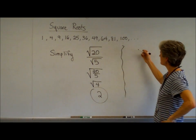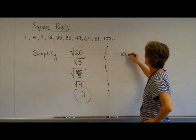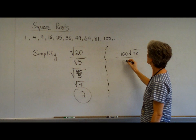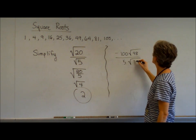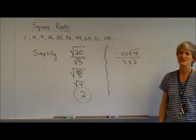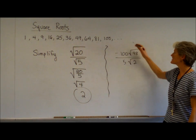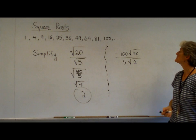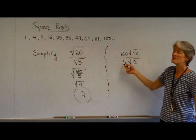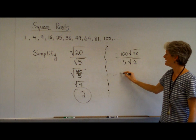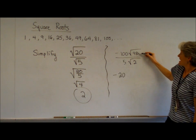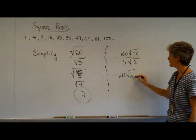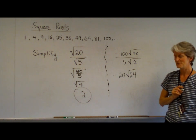Let's do one more. Negative 100 times the square root of 48 over 5 times the square root of 2. It's just negative 100 times square root of 48 over 5 times the square root of 2. I can divide things that divide nicely. What divides nicely with negative 100 is that 5. Negative 20. What divides nicely with that 48? The 2. 48 divided by 2 is 24.